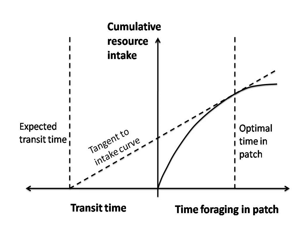Giving up time (GUT) is the interval of time between when the animal last feeds and when it leaves the patch. Giving up density (GUD) is the food density within a patch when the animal will choose to move on to other food patches.